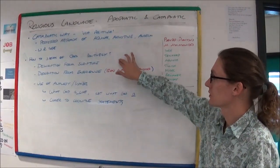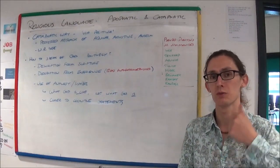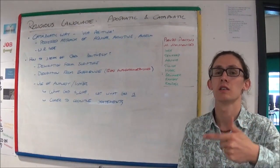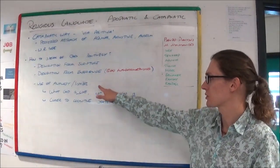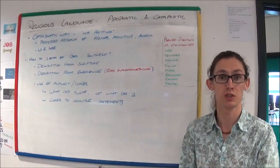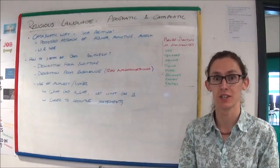So in a cataphatic way, we're thinking Aquinas, we're thinking Inga, Augustine, Anselm in particular. But we're going to have a look a little bit closer now at analogy, which is another of Aquinas' ideas, and symbol, which is Paul Tillich's idea.